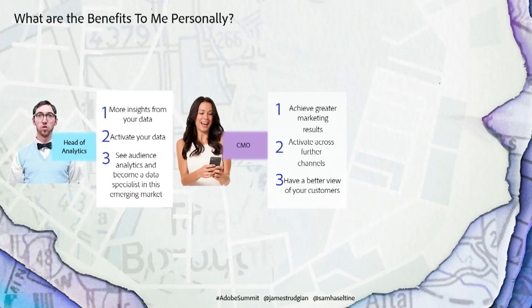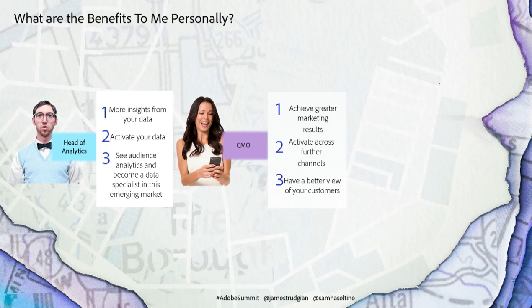As a CMO, you want to reach people, not devices. Being able to stitch all of that information together and get to a person and audience level is key. It will enable you to activate that across digital marketing channels, not just across your website.